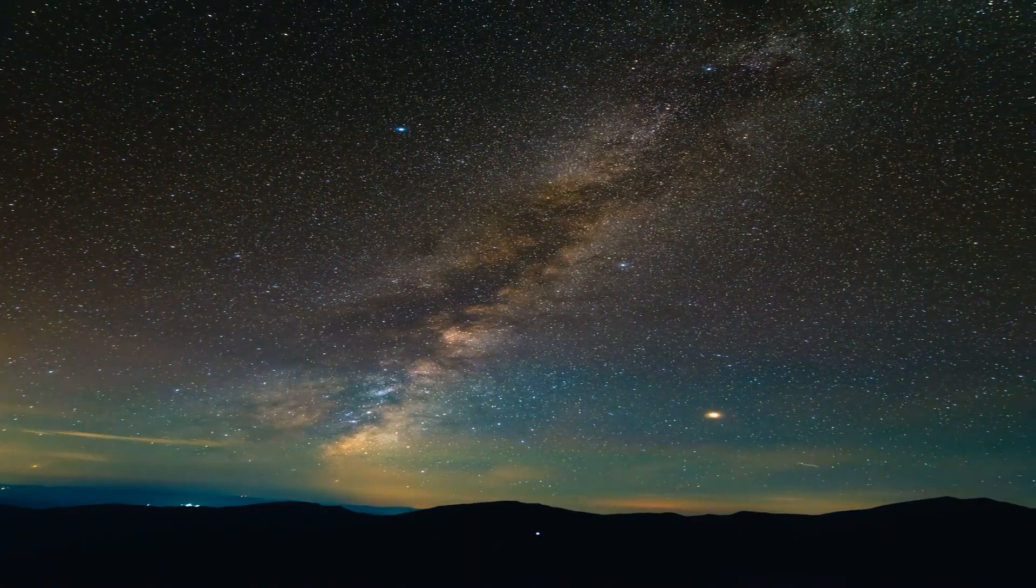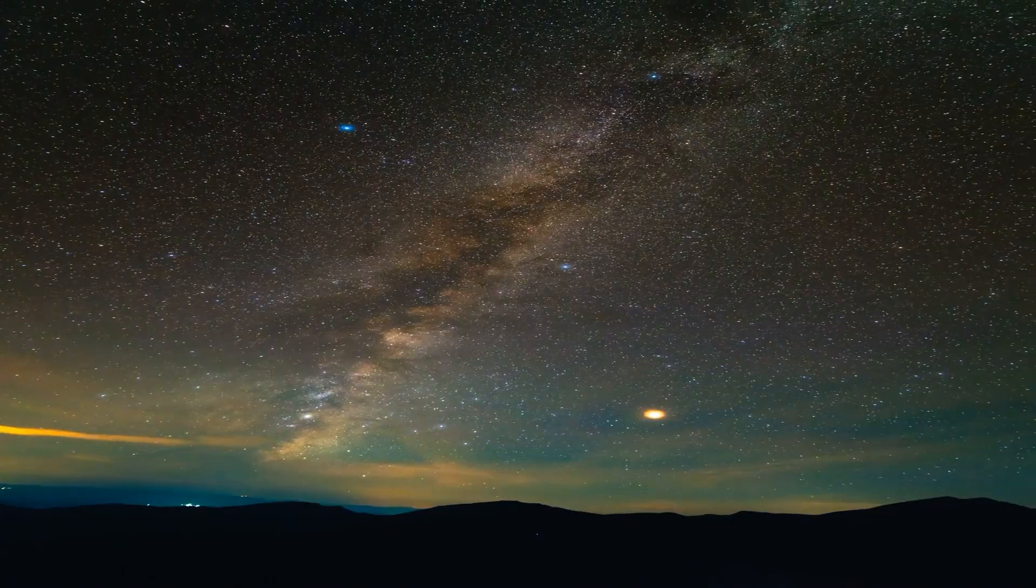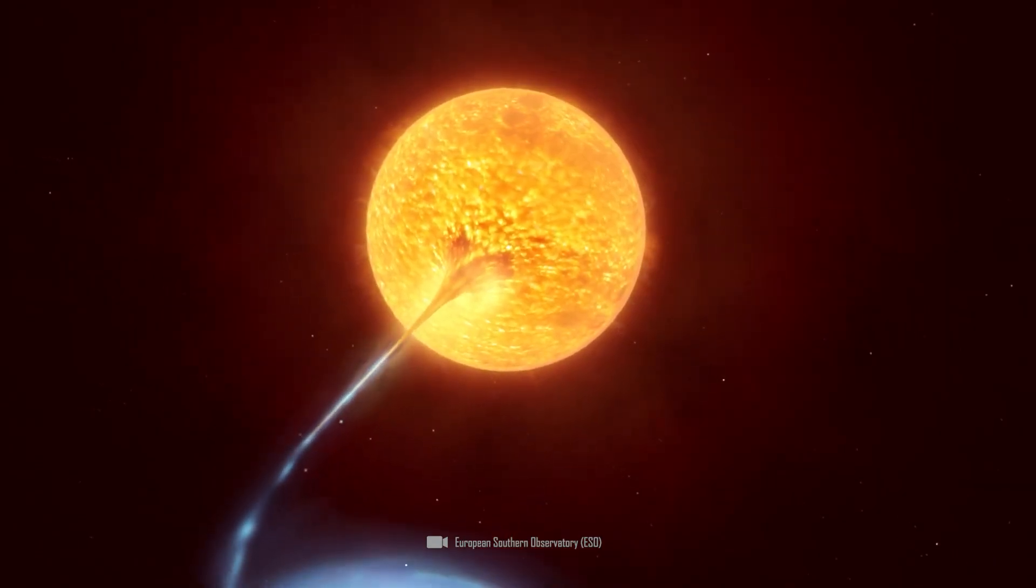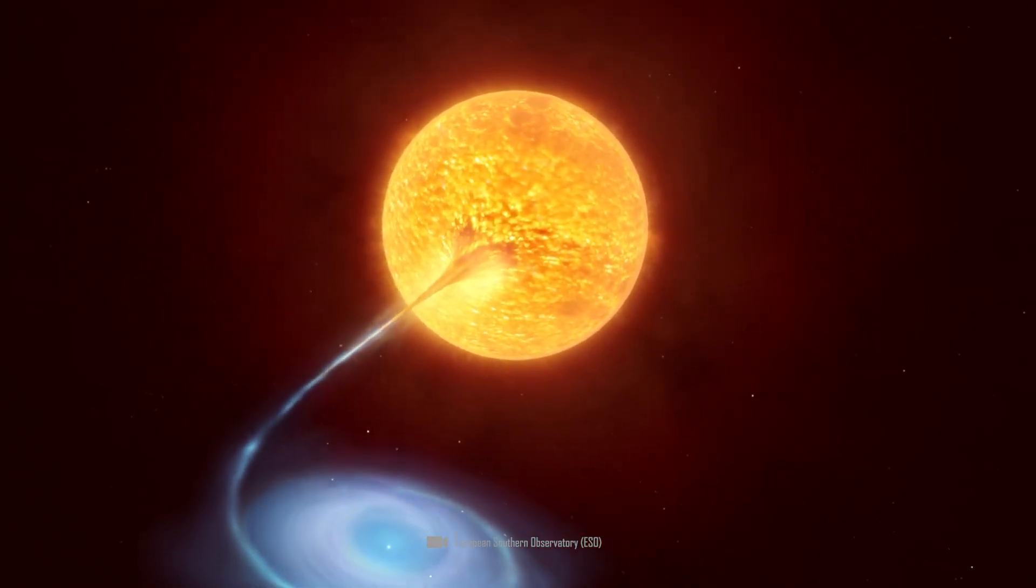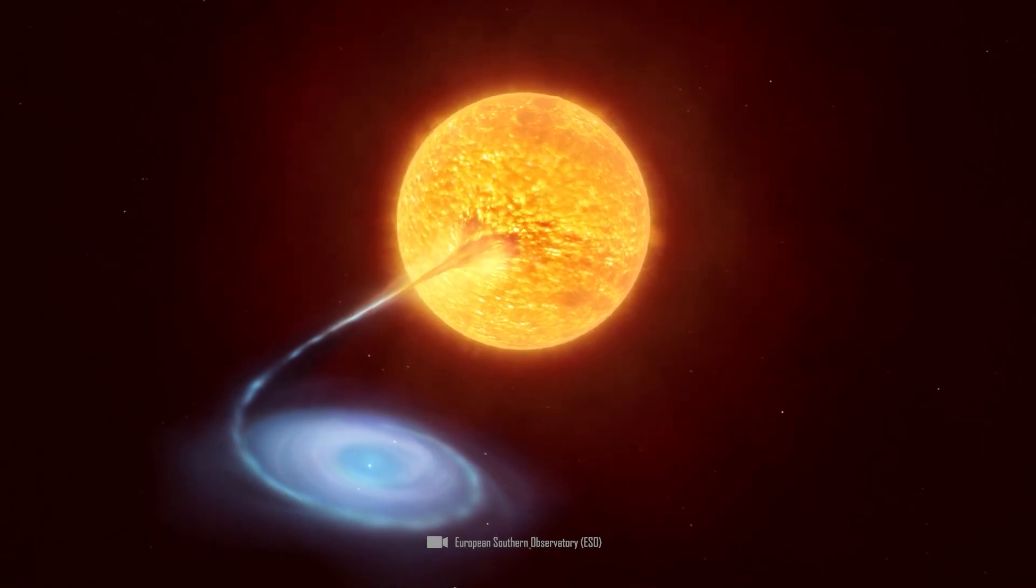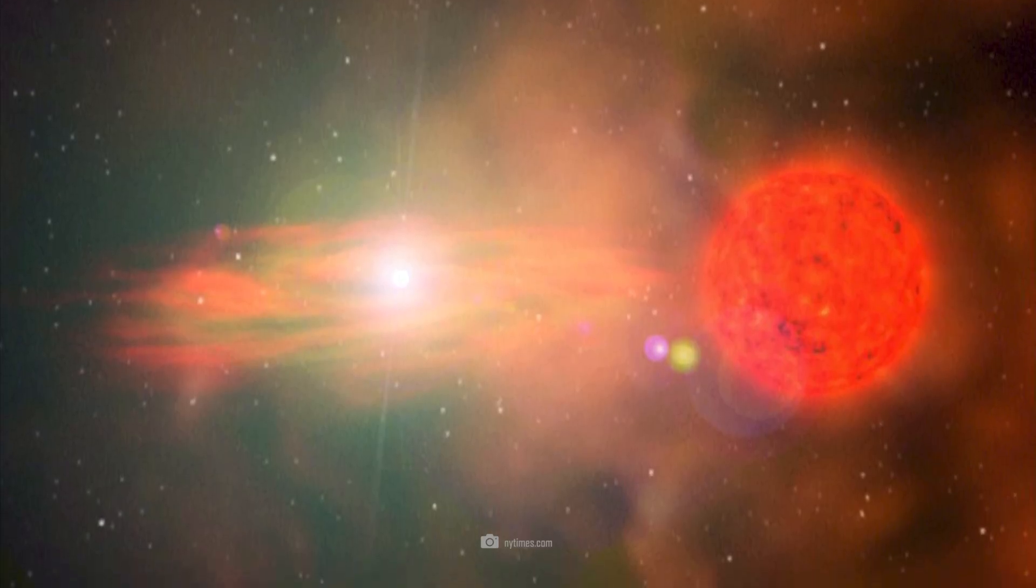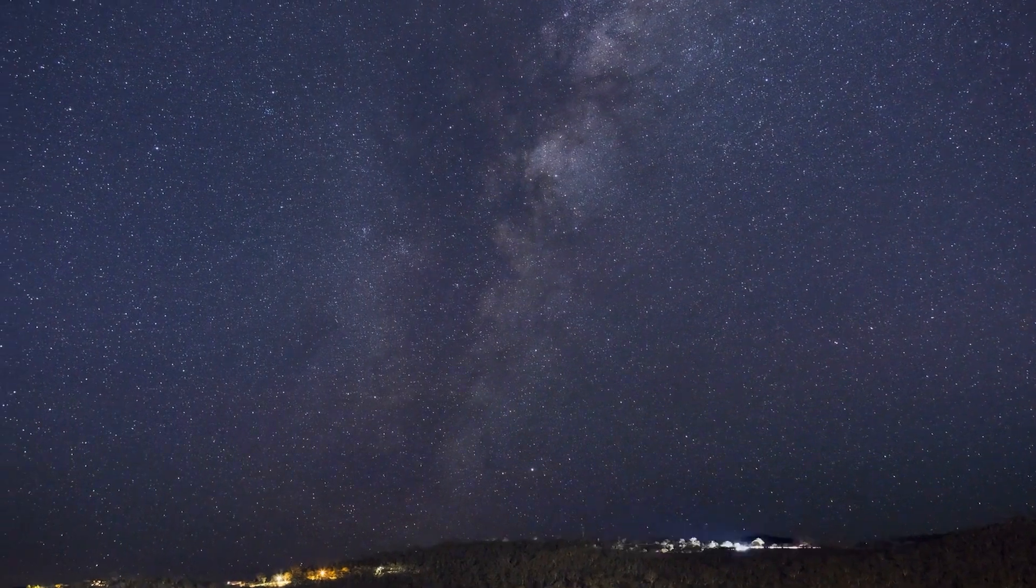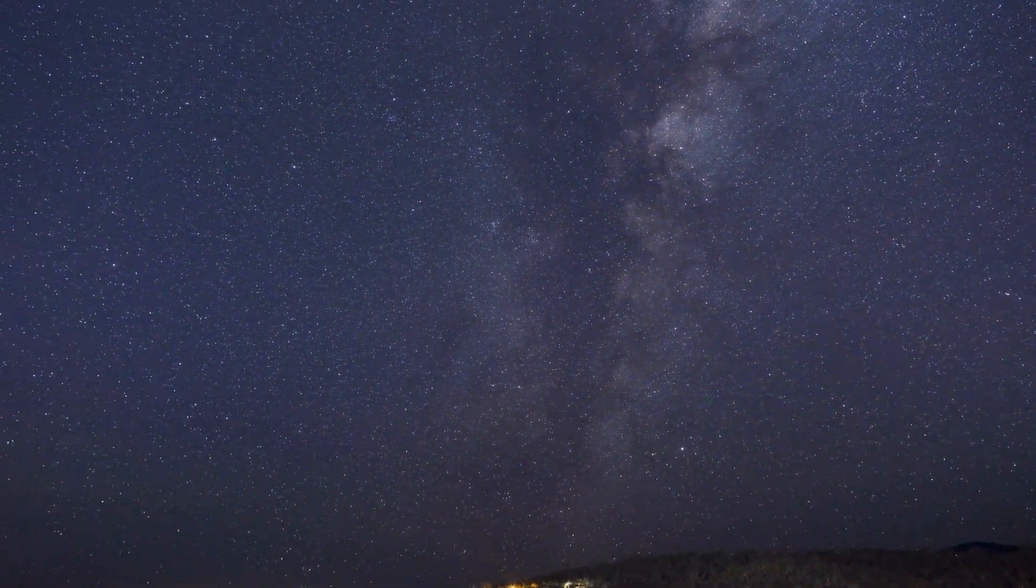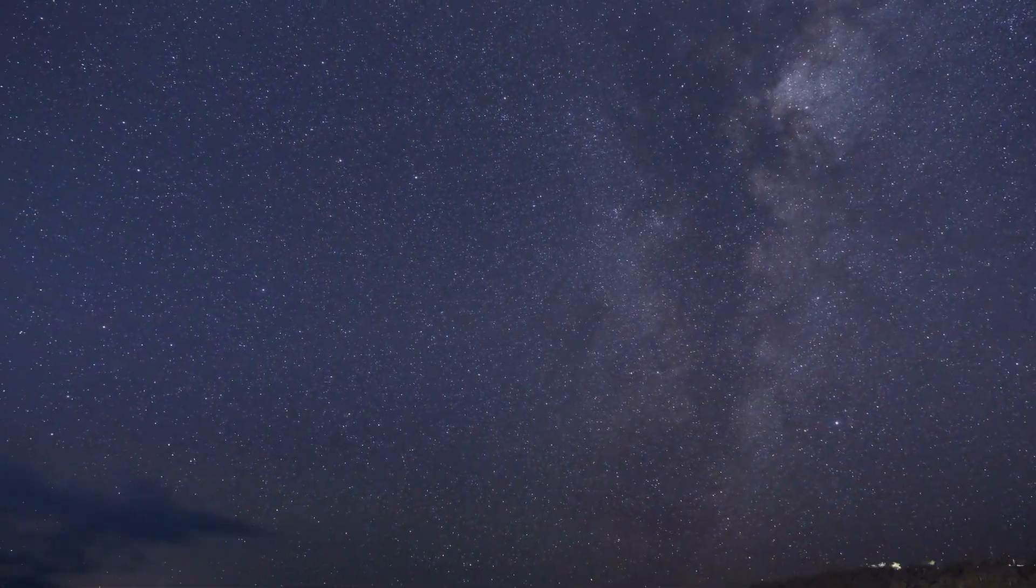The difference between a nova and a supernova is simple. The nova is formed in a binary system where a white dwarf accumulates matter from a companion star. The white dwarf is not destroyed by the explosion. It can even produce several novae over thousands of years. Supernovae are much more intense events in which a star is completely destroyed.